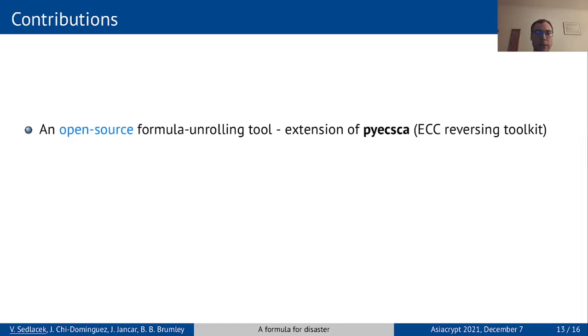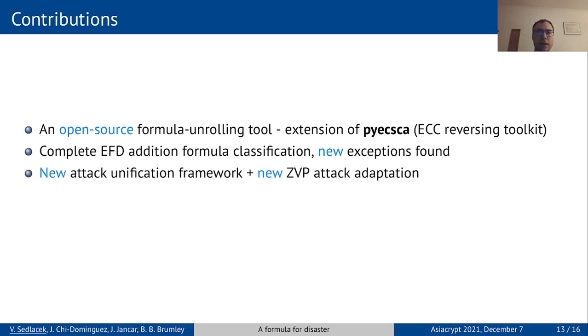To wrap it up, what are our contributions? We released the tool for formula unrolling as an extension of pyecsca, which is an open-source toolkit for reversing ECC implementations. We completed the classification of EFD addition formulas and found a new family of exceptions. We unified three known attacks in a formal framework that allowed us to come up with a new attack on window methods.